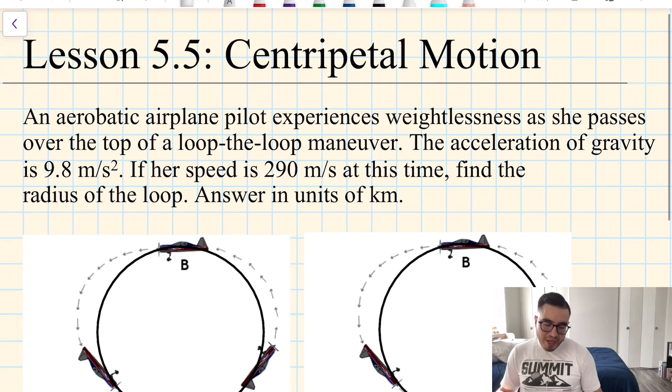Okay, so we have an example for centripetal motion. An aerobatic airplane pilot experiences weightlessness as she passes over the top of a loop-to-loop maneuver. The acceleration of gravity is 9.8 meters per second squared. If her speed is 290 meters per second at this time, find the radius of the loop, answering in units of kilometers.